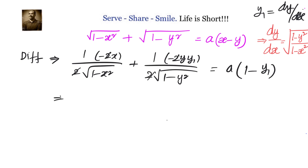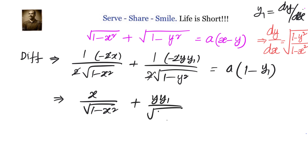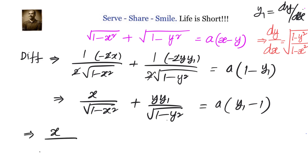Now cancel the 2s and shift the minus to the right hand side. We get x over √(1 minus x²) plus y over √(1 minus y²) equals a times (y1 minus 1). Since the answer should not contain 'a', we need to replace 'a' using the original equation.